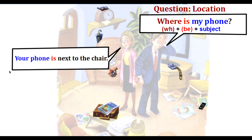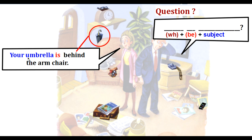Now let's look at the question of location. For example: Where is my phone? 'Where' is the question word for location, then 'is,' then the subject. Your phone is next to the chair. Let's practice: Your umbrella is behind the armchair. The location question: Where is my umbrella?